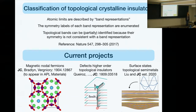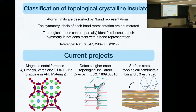Fragile phases do exist as part of the K-theory classification as distinct phases — it's not that they're absent from K-theory. They are there, but they might be identified as trivial in certain formulations. They do exist as part of the K-theory classification, so there's no problem there.